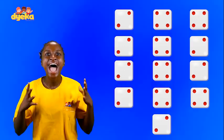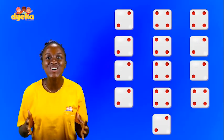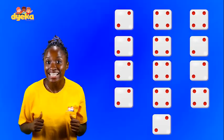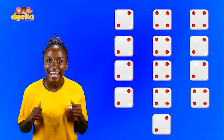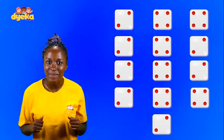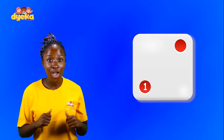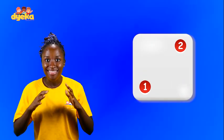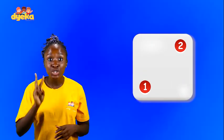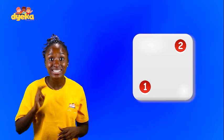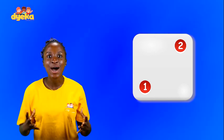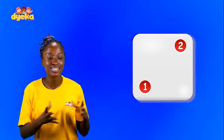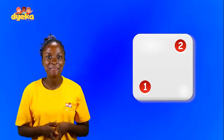Yes! How many dots are on the first dice? Let's count. 1, 2. That's 2 dots. Now, let's put all the dice with 2 dots here.